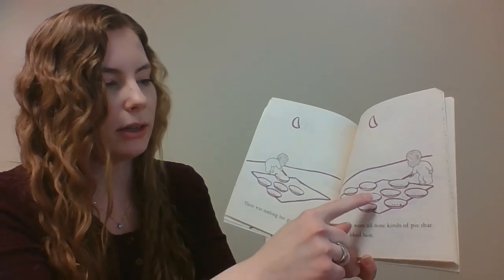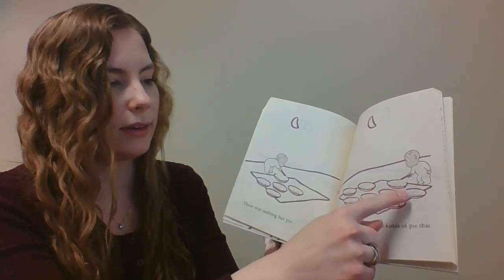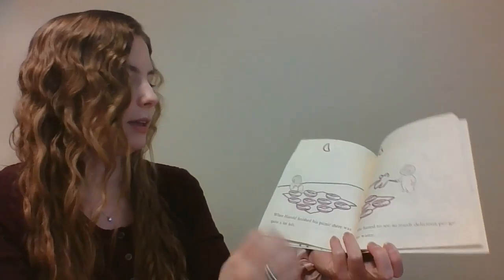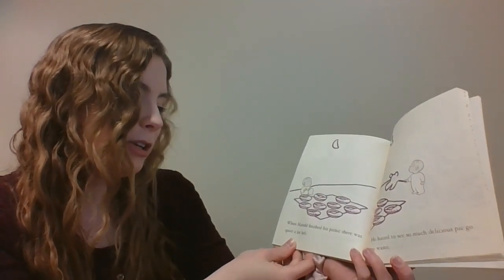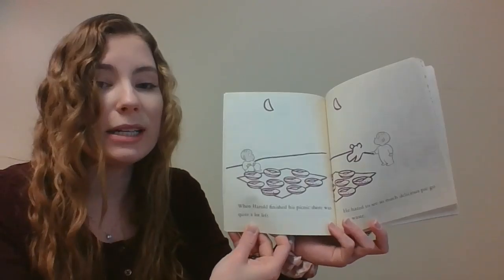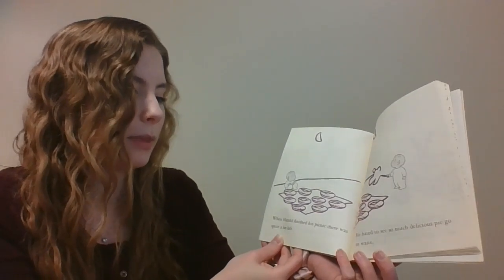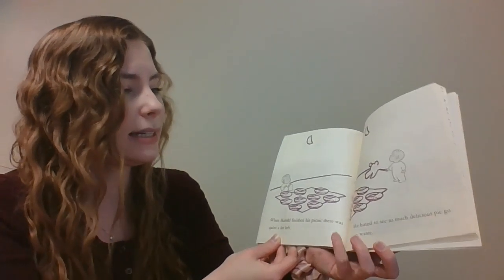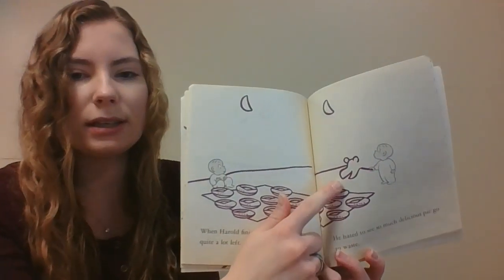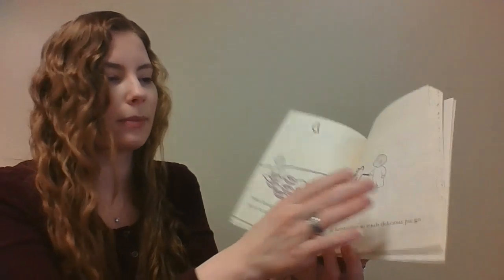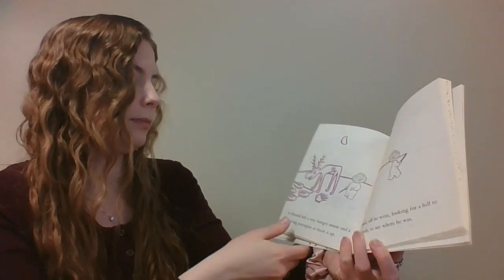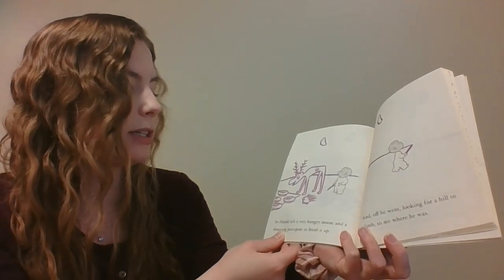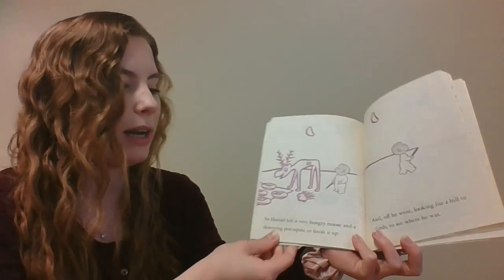One, two, three, four, five, six, seven, eight, nine. Nine pies. When Harold finished his picnic, there was quite a lot left. He hated to see so much delicious pie go to waste. Oh, what do you think he's making? So, Harold left a very hungry moose and a deserving porcupine to finish it up.